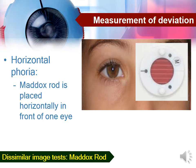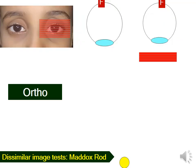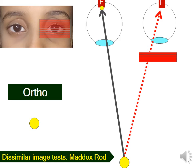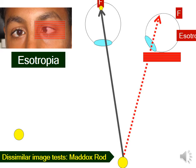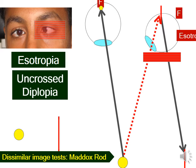To test for horizontal phoria, the Maddox rod is placed horizontally in front of one eye. If the patient has straight eyes, the image of the spot of light will fall on the fovea of the right eye, while the Maddox rod will convert the spot into a vertical red line that also falls on the fovea — so the patient will see the spot of light in the middle of the vertical red line. If the patient has esotropia, the red line will fall on the nasal retina, and the patient will assume the red line is to the left of the spot of light — this is known as uncrossed diplopia, because the red line is seen on the same side as the Maddox rod.